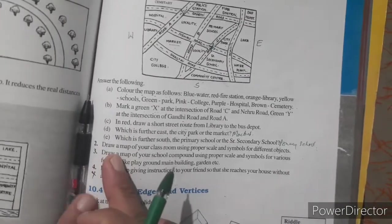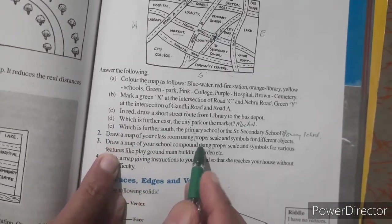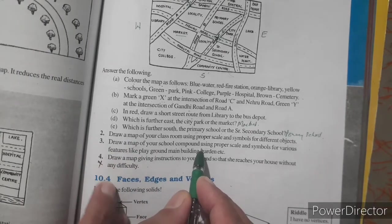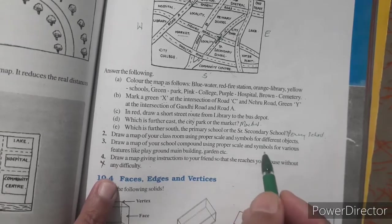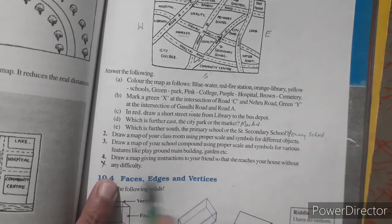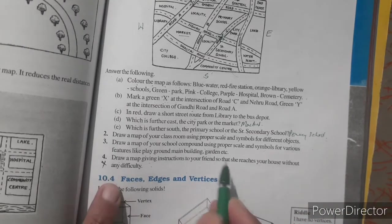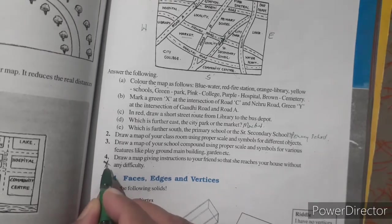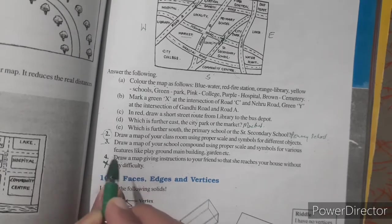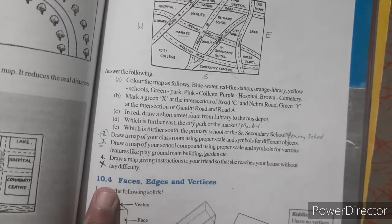Now question number two. Draw a map of your classroom. And third one is draw a map of your school compound by using different type of symbols. Third one is draw a map giving instruction to your friend. You just cut that one. We just draw second and third. Here I show you second one, how to draw a map, and third question you just do yourself.